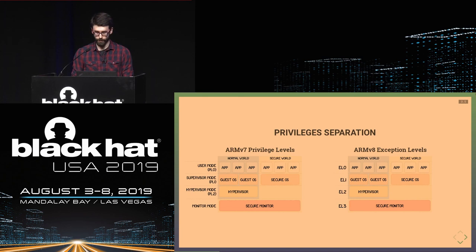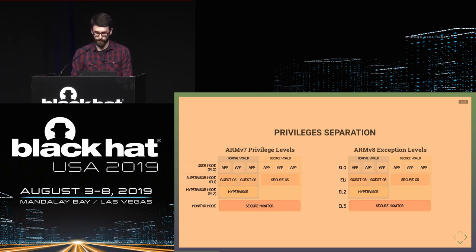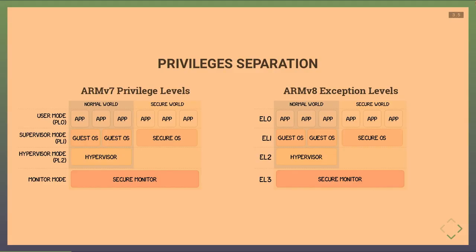A quick reminder on privilege separation on ARM systems: in ARMv7 these are called privilege levels, in ARMv8 they are called exception levels. At EL0 you have all applications — the least privileged level in both worlds. EL1 is where the operating system runs. EL2 is the hypervisor. EL3 only exists in the secure world and is where you find the secure monitor.